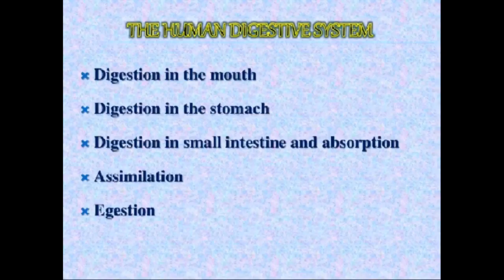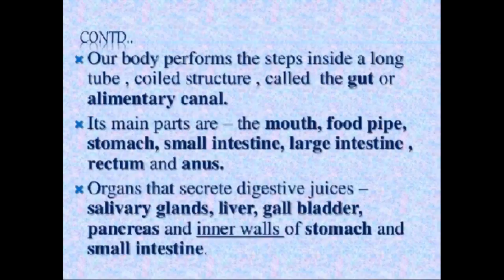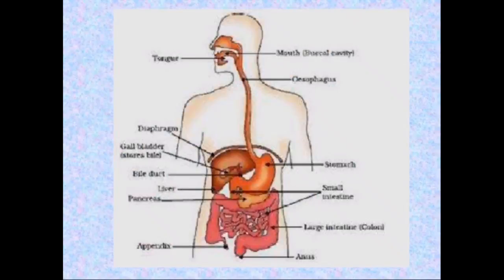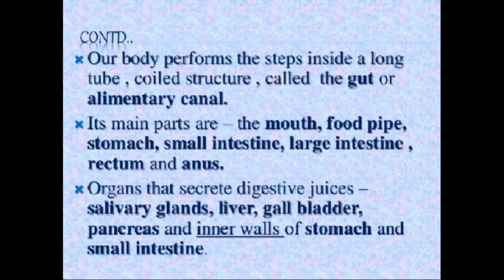We will study digestion in the mouth, digestion in the stomach, digestion in the small intestine, and then absorption, assimilation and egestion. Our body performs these steps inside a long tube-coiled structure called the gut or alimentary canal — this entire structure from mouth to anus is the alimentary canal.